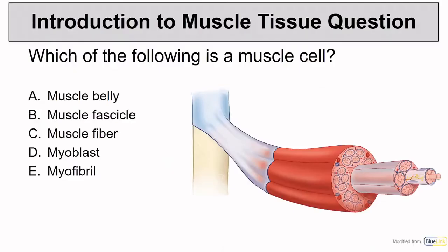Now we've made it through the beginning of muscle tissue. For our first question: which of the following is a muscle cell? A muscle belly, fascicle, fiber, myoblast, or myofibril? Pause so you can review the terminology and choose your correct answer — try to think about what you remember about each of these terms. When you're ready, let's talk about this question.